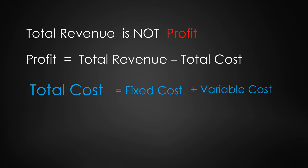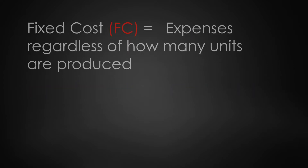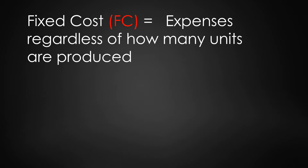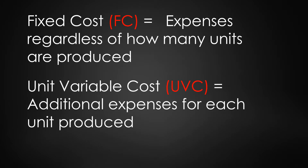Total cost is made up of fixed cost plus variable cost. Let's use FC for fixed costs and UVC for unit variable cost — that is the cost that varies per unit produced. Fixed costs are the costs associated with doing business before you even produce one unit of product. It could be rent, utilities, taxes, insurance, machinery — any costs associated with doing business.